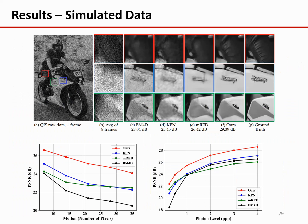After training on simulated QIS data, we test the proposed method on both simulated and real QIS data. In the top figure, the photon level is 2 photons per pixel and the magnitude of the global motion is 28 pixels across 8 frames. We observe that our proposed method can remove the noise while preserving details. We plot two sets of curves: in the first plot, we fix the photon level at 2 photons per pixel and show PSNR as a function of motion magnitude; in the second plot, we show PSNR versus photon level at a motion magnitude of 4 pixels. Our proposed method achieves higher PSNR compared to the three competing methods, suggesting it can solve the motion and noise dilemma.